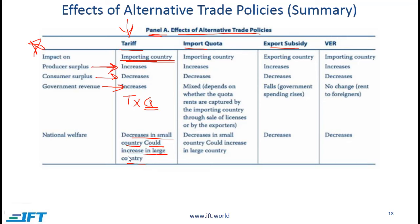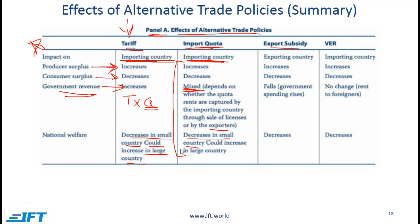With an import quota, the impact is again on the importing country. The content is essentially similar to a tariff. The difference is related to government revenue — the impact is mixed. It depends on whether the quota rents are captured by the importing country through sale of licenses or by the exporters. National welfare decreases for a small country; with a large country there could be an increase.